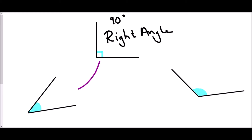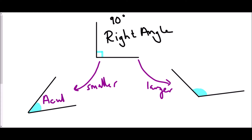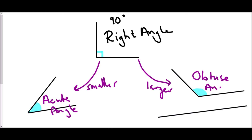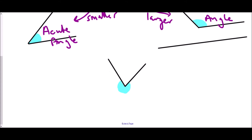It will always be exactly 90 degrees. When we start looking at the next two angles, we are always comparing them to that right angle. Here we have an angle which is smaller, and here we have an angle which is larger. If the angle is smaller than 90 degrees, that is known as an acute angle. If the angle is larger than 90 degrees but not quite a straight line — a straight line would be 180 degrees — then that is known as an obtuse angle, so it's greater than 90 but less than 180.